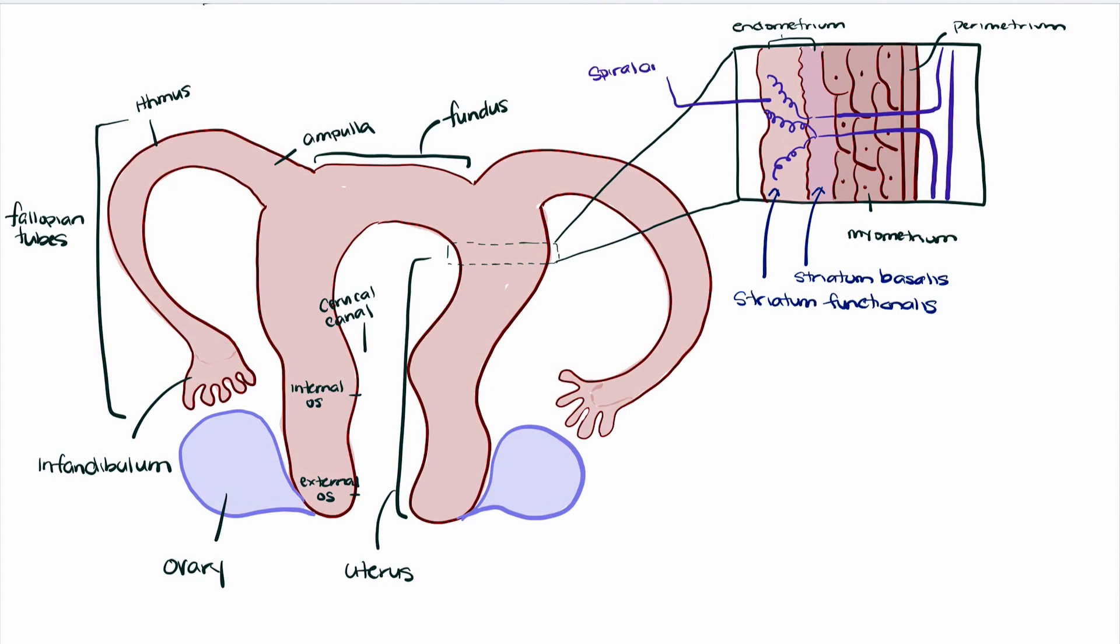And those spiral arteries will actually become engorged with blood or will widen during pregnancy in order to support growth of the stratum functionalis.